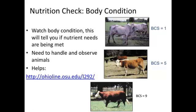Always remember our nutrition check — that's body condition. Watch the body condition of your animals. These photos use a body condition score from one to nine, where one is emaciated and nine is overly fat and obese. We'd like most of our livestock to be in a body condition score of five to maybe six. That will also tell you if you've got a good forage test as you're feeding it — watch your animals, handle and observe them, and see if your body condition score is matching up with the type of feed quality you think you have.